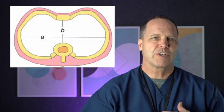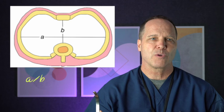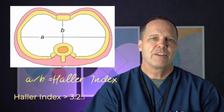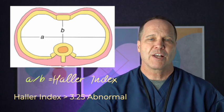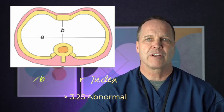The initial tests done are a CAT scan, computed tomography of the chest, which measures the deepest portion of the chest and relates it to the widest portion of the chest. In this situation, you get an index called the Haller index, which estimates the severity of the pectus asymmetry.